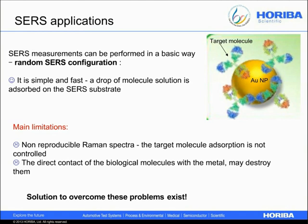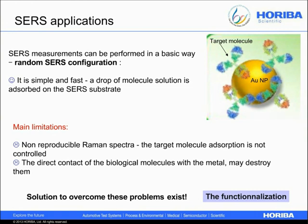There are solutions to overcome these problems, and one of them is functionalization. What is functionalization? The functionalization is often a molecule which will serve to better fix and orient the target molecule. As we can observe in the figure, the functionalization is usually placed between the SERS substrate and the target molecule. With this solution, a new door is opened to a new experimental SERS configuration called the oriented configuration. The functionalization is used to orient the target molecule in one way, as shown in the figure. This improvement leads to reproducible SERS signals, and another advantage is that the molecule is more stable and its structure is better preserved.